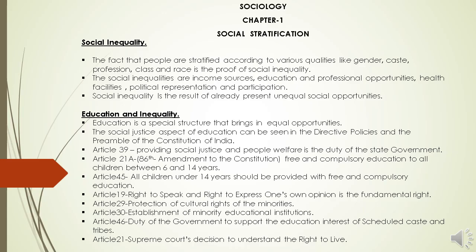Article 39 provides that social justice and people's welfare is a duty of the state government. Article 21A of the 86th amendment to the constitution tells us that free and compulsory education is available to all children between 6 and 14 years — a very important article. Article 45 tells us that all children under 14 years should be provided with free and compulsory education. Article 19 tells us that the right to speak and the right to express one's own opinion is a fundamental right.